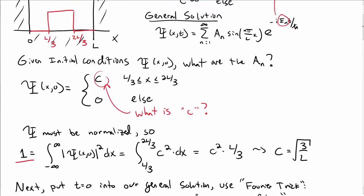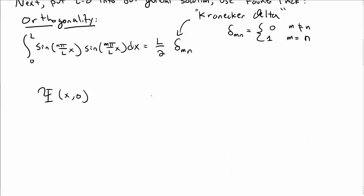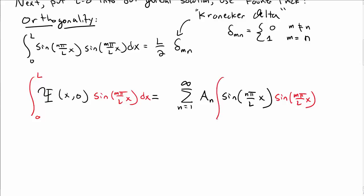So this tells us that psi at T equal to 0, when I plug T equal to 0 in my general solution, I get the sum n equal to 1 to infinity, a sub n, sine of n pi over Lx. What I'm going to do is multiply both sides by sine of m pi over Lx, then integrate both sides from 0 to L dx.